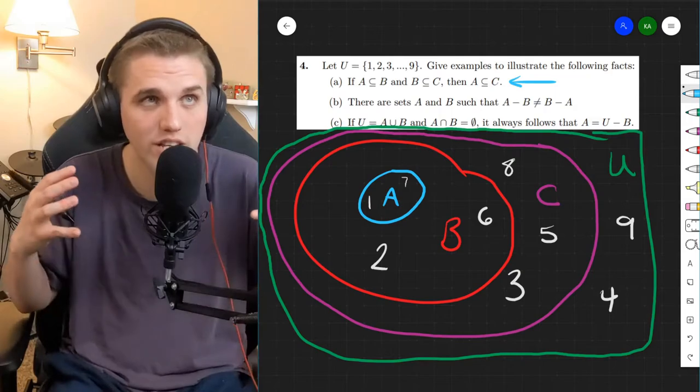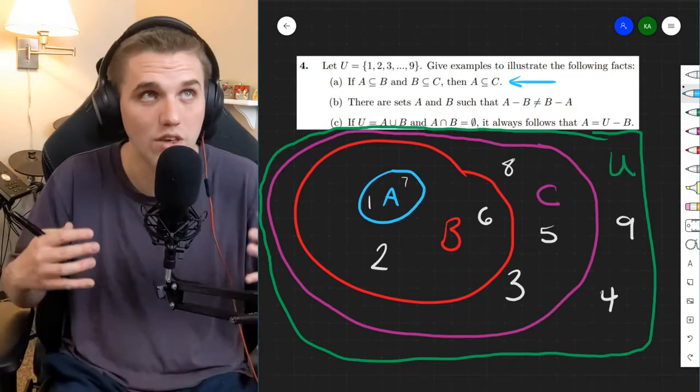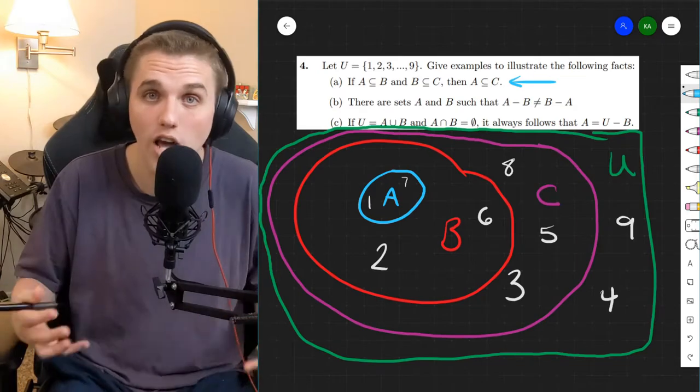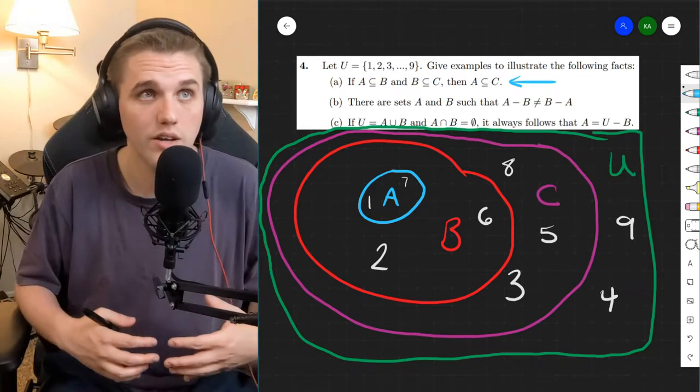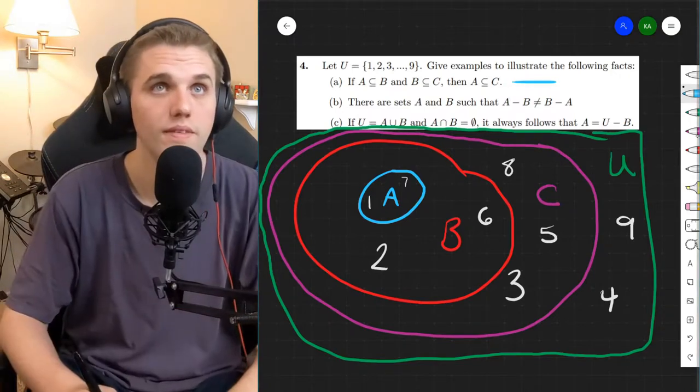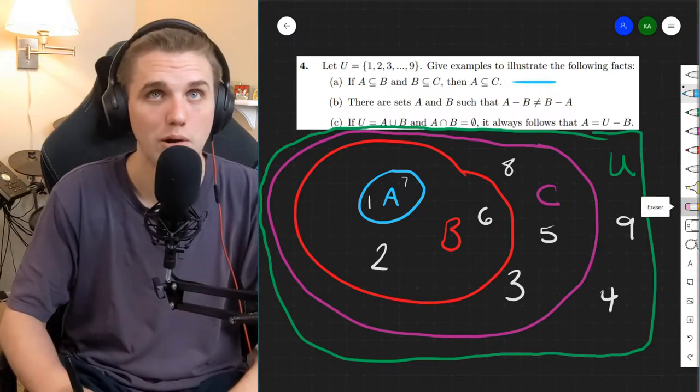So if you can already see that A is inside B, is inside C, is inside the universe, then draw it like that. If you already know that A and B are not intersecting, then draw them like that. All right, let's move on to part B.